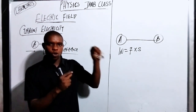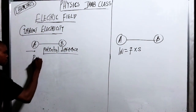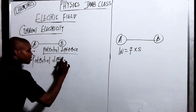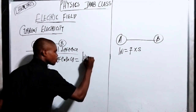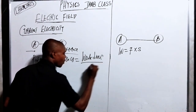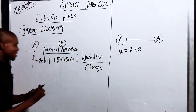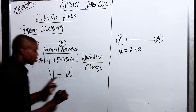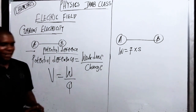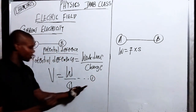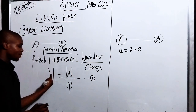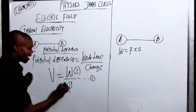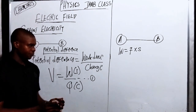So the formula for potential difference is: V equals W over Q — where W is the work done and Q is the charge. This is the first formula you need to take note of. The unit of voltage is volts, and the unit of charge Q is called coulombs. Very important.